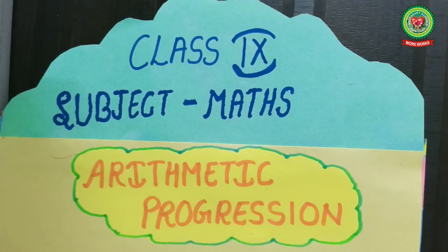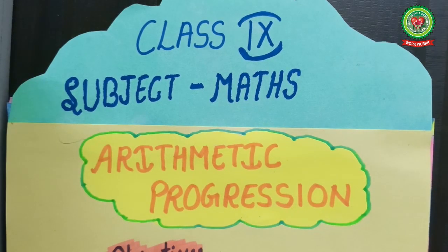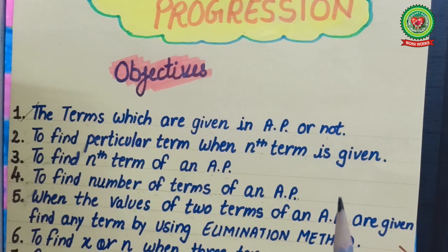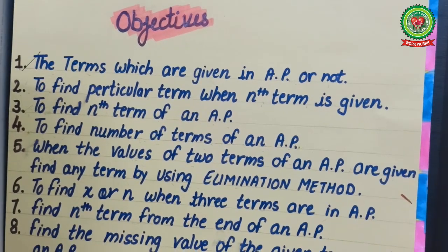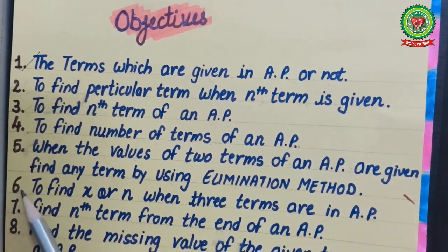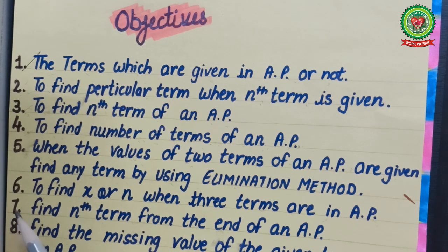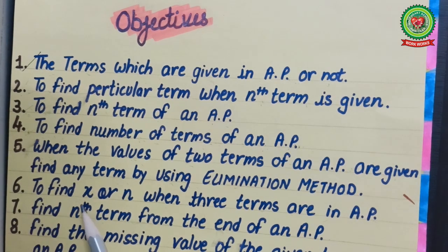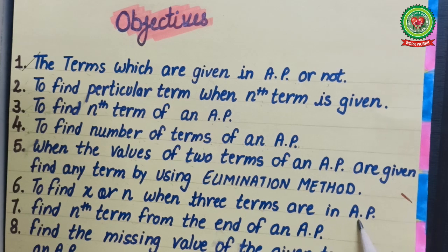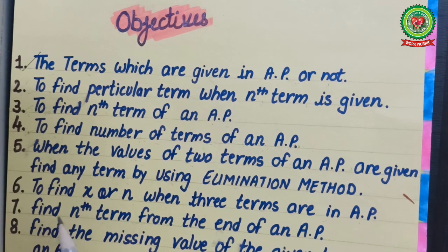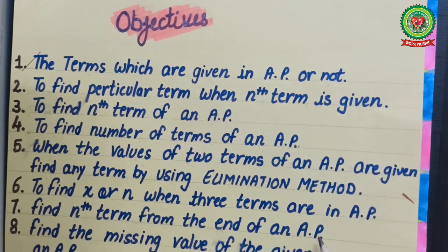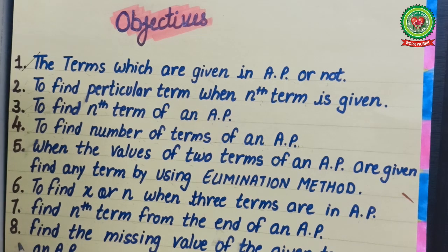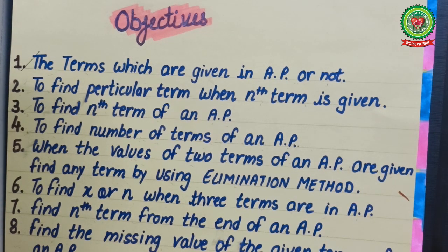Hello everyone. As earlier we started with the practice of this chapter on Arithmetic Progression, we have done its first five objectives. Today we will continue with objectives six, seventh, and eighth. Sixth objective is to find x or n when three terms are in AP. Seventh: find the nth term from the end of an AP. Eighth objective is to find the missing value of given terms of an AP.